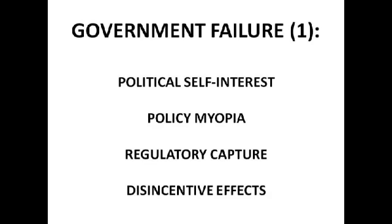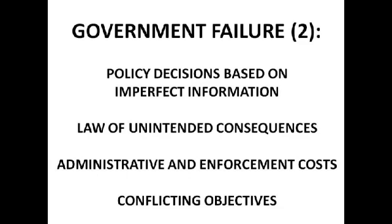Then we have the disincentive effect. The big one is benefits: people think why should I work when I can earn just as much on benefits? This disincentivises people from working, leading to more unemployment and productive inefficiency within the economy, as not all factors of production are being used to their full maximum output — we're not on the production possibility boundary. Moving on to the second set of government failures: one is when policy decisions are based on imperfect information. For example, fewer people are voting each year, and those who do vote tend to be older, so government follows older people's ideas and policies may not be best for the society of tomorrow.